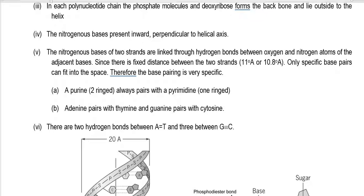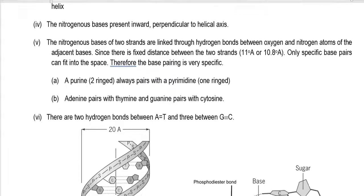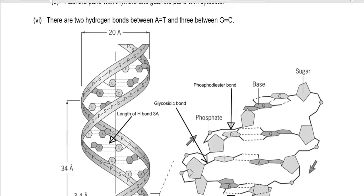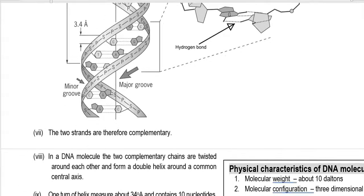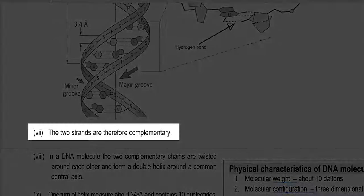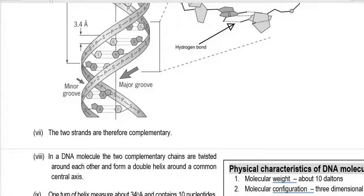So it naturally follows that adenine pairs with thymine and guanine pairs with cytosine. The number of hydrogen bonds between adenine and thymine is always 2, whereas it is 3 between guanine and cytosine. All these points are clearly shown in the image. The two strands are therefore complementary in nature — if A is present, then T will be present in the other strand; if G is present in one strand, only C will be present in the other strand.